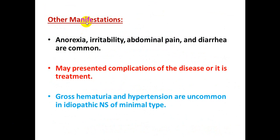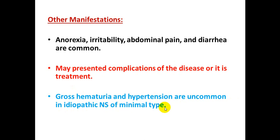Other manifestations in a case of nephrotic syndrome are anorexia, irritability, abdominal pain, and diarrhea. A patient with nephrotic syndrome may also present with complications of the disease or complications of its treatment. Gross hematuria and hypertension are uncommon in idiopathic nephrotic syndrome of the minimal change type.